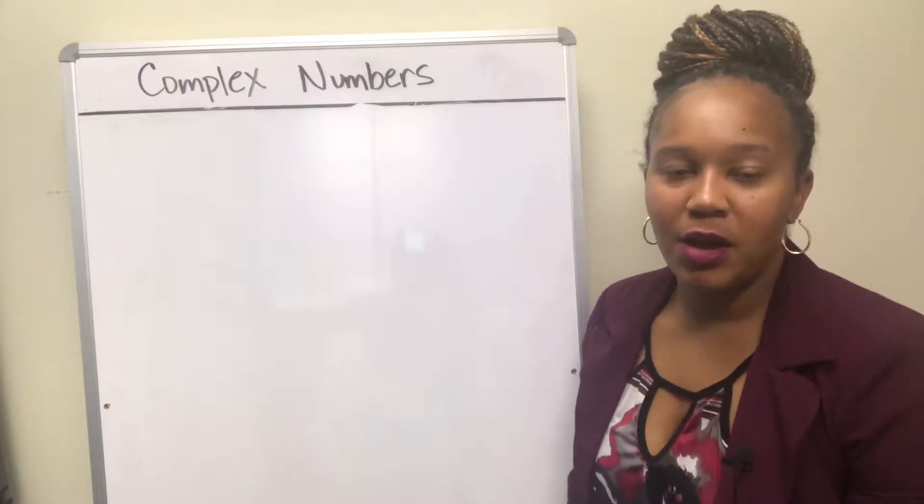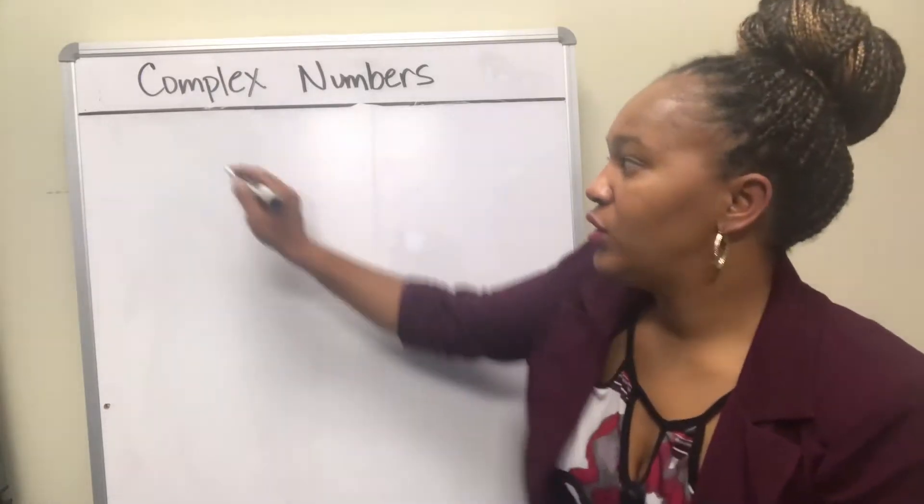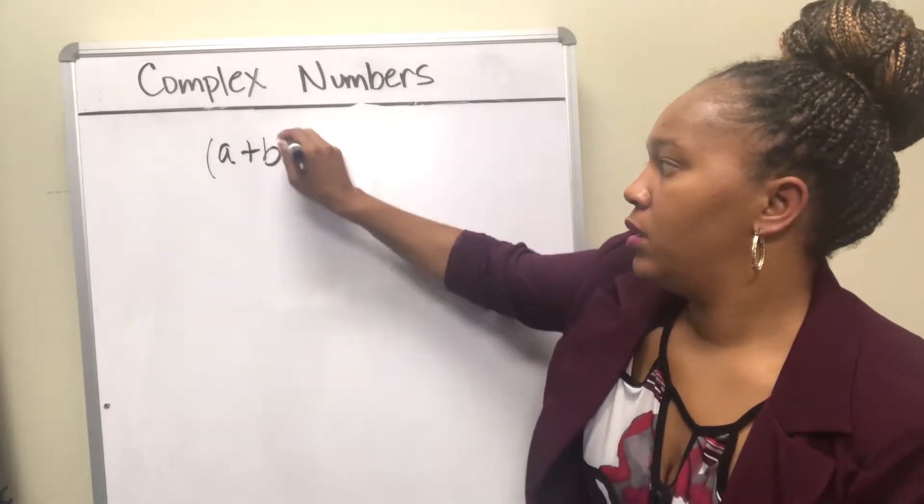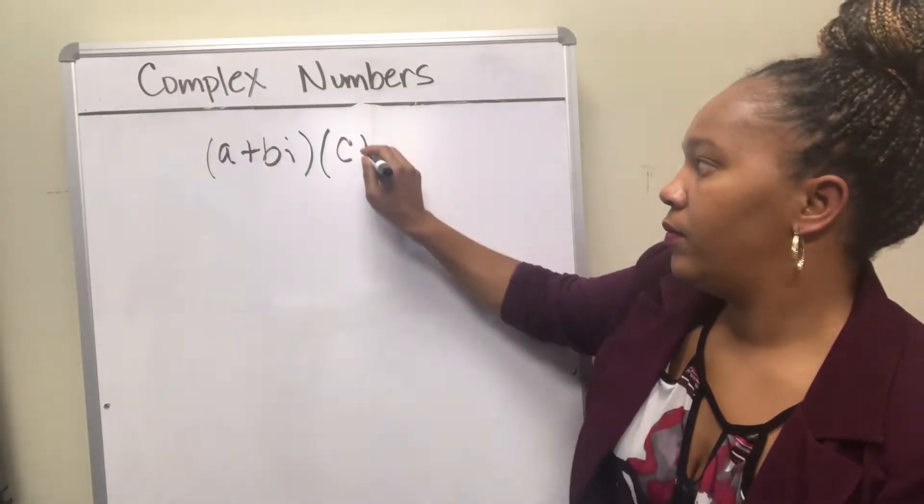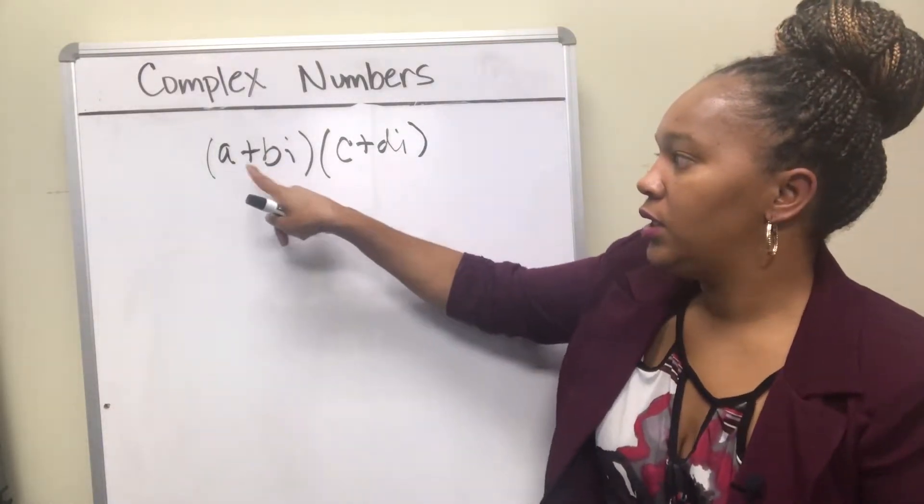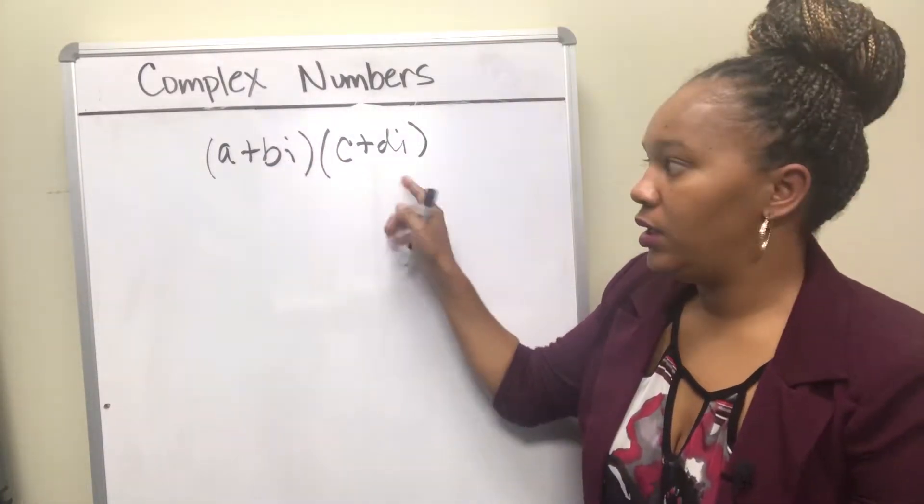Now we're going to look at multiplying complex numbers. So if we have two generic complex numbers and we want to multiply them, then basically what we want to do is take each of these and multiply by each of these.